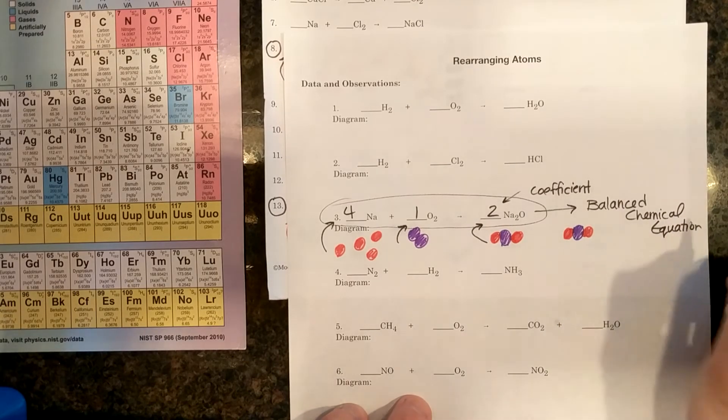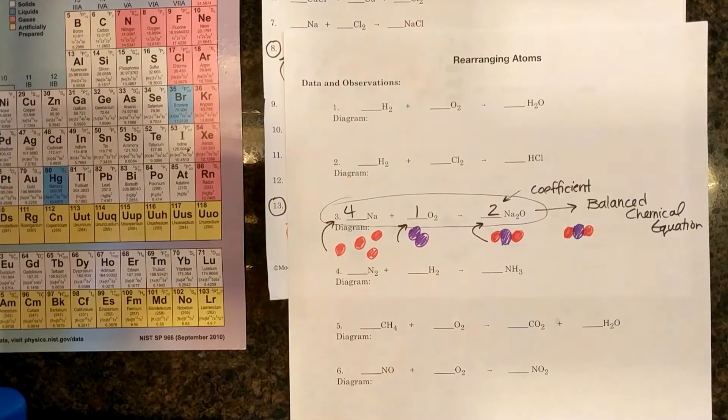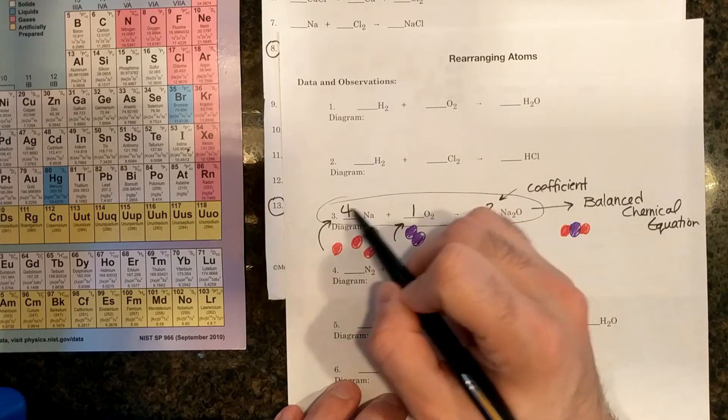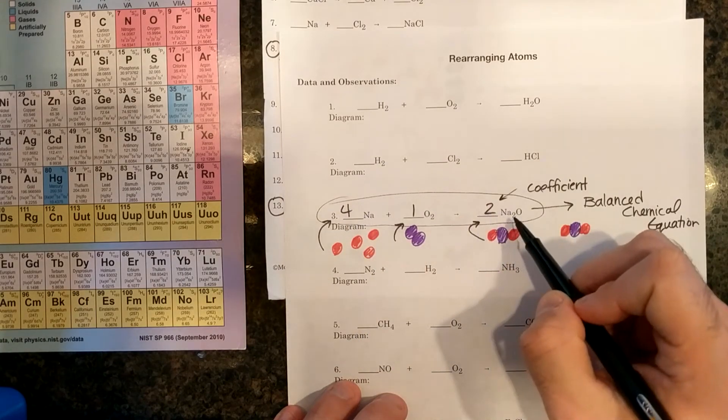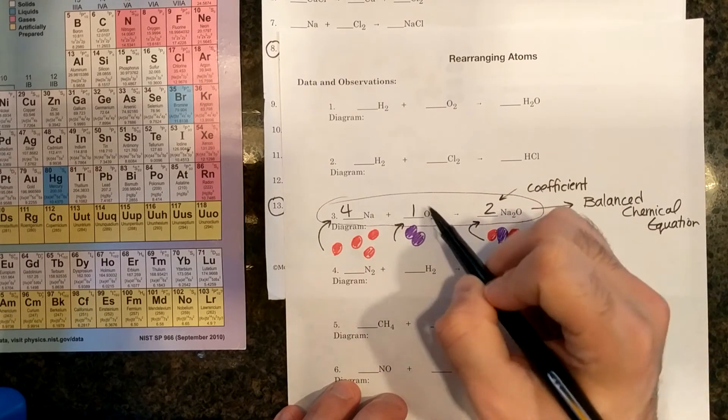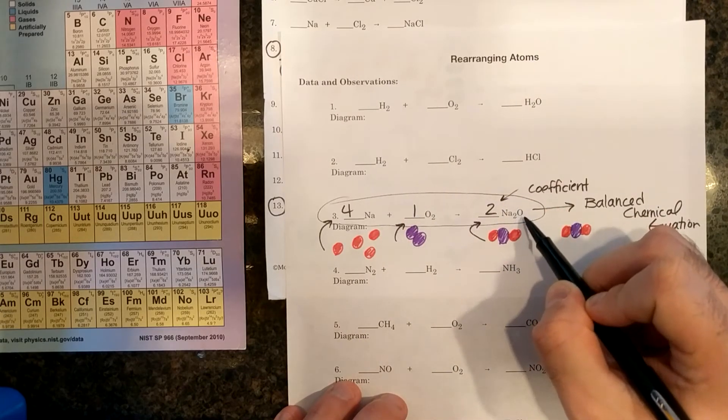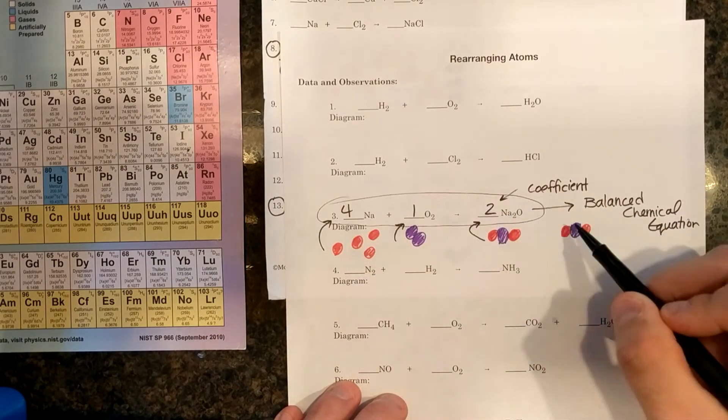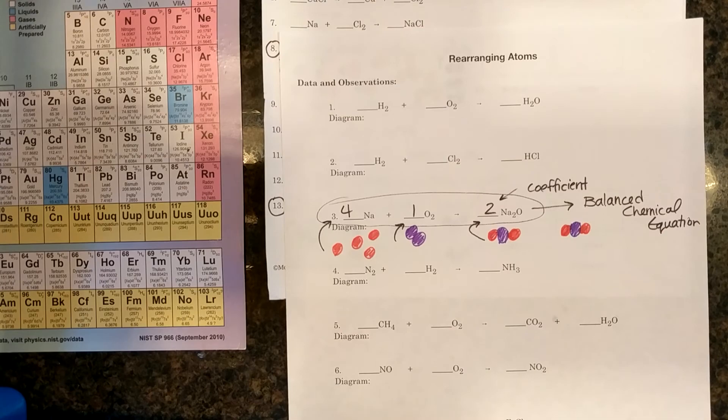If I was given chemical equations and asked if the equation was balanced, I need to count atoms. I have four Na right here given in the problem and I have two Na2, which gives me four Na on the right. I have one O2, so I have two O's on the left and I have two times one O, so it's two O's on the right. This is balanced and I have the same number of atoms on both sides.